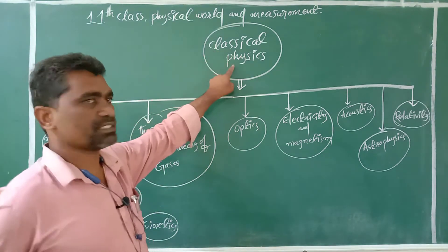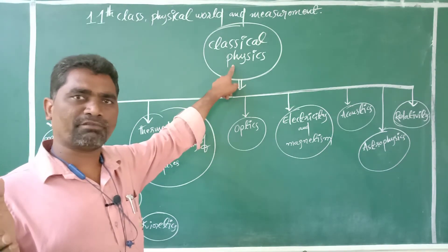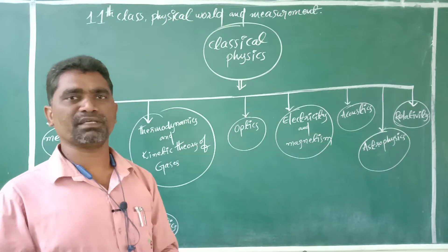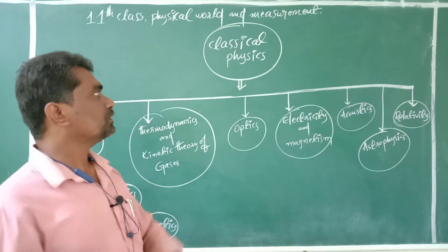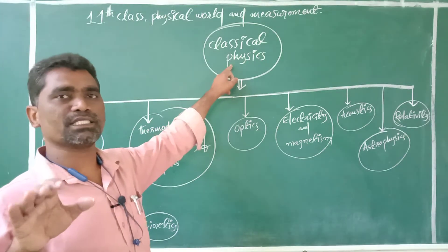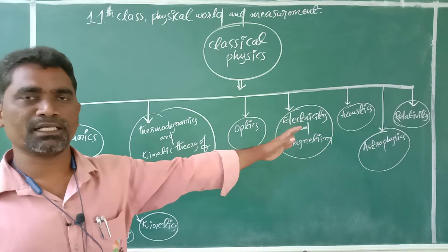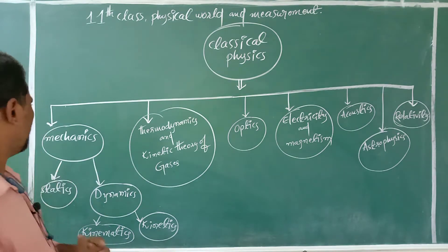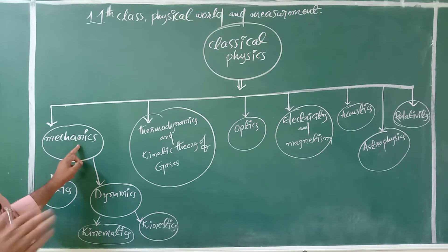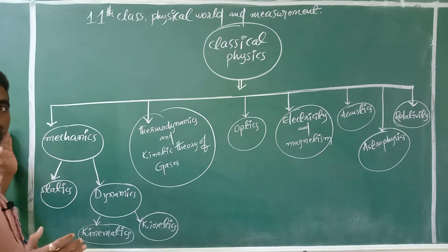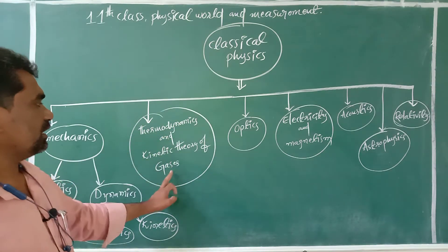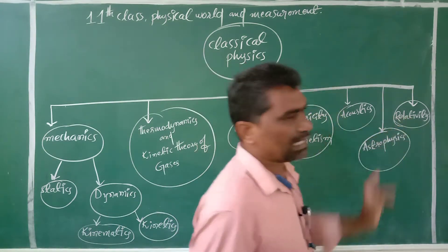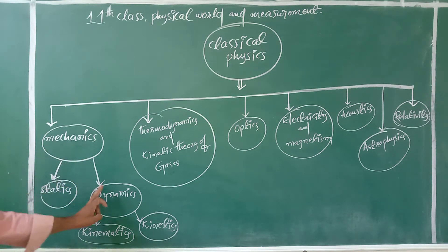We already discussed what is the meaning of classical physics. Classical physics means, in general language, which was invented before the year 1900. So physics which was invented before 1900 is called classical physics. The branches which come under classical physics — mechanics, thermodynamics and kinetic theory of gases, optics, electricity and magnetism, acoustics, astrophysics, relativity — were all invented and discovered before 1900.